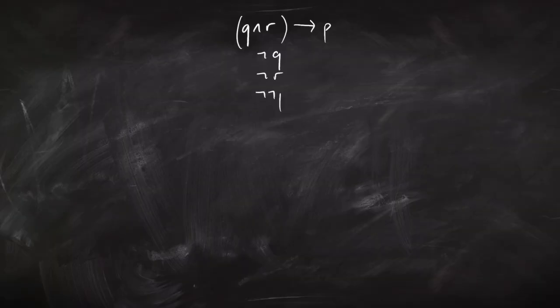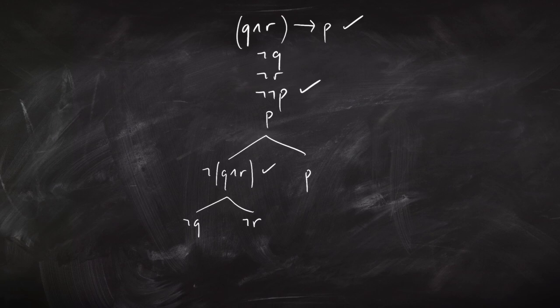If on the other hand you have applied all the rules that you can possibly apply, but your tree just won't close, that means the premises don't entail the conclusion. And here's a really cool feature: you can use your finished open tree to explain why the premises don't entail the conclusion. You can use it to build a countermodel.